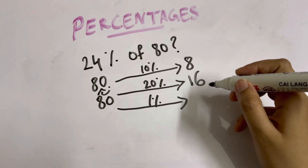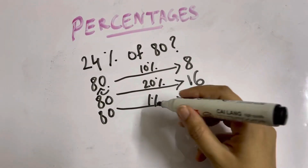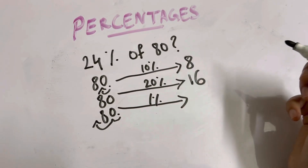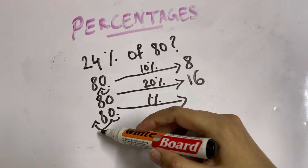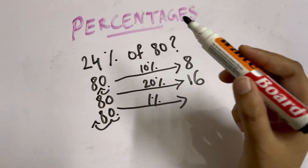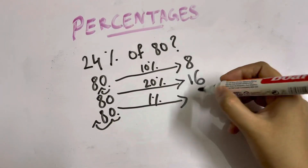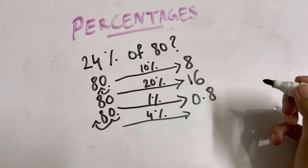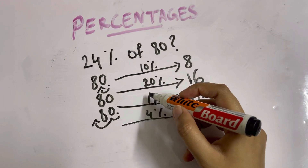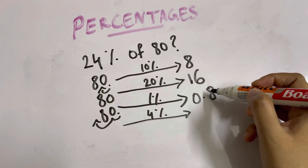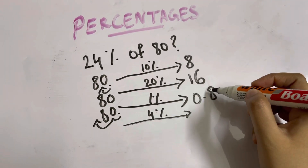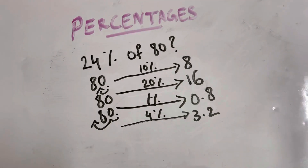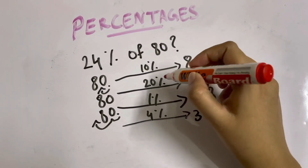To find 1% of 80, take the decimal towards the right and move two slots towards the left — so 1% of 80 is 0.8. For 4%, multiply 4 by 1%: 4 times 0.8. Since 4 times 8 is 32, then 4 times 0.8 is 3.2.